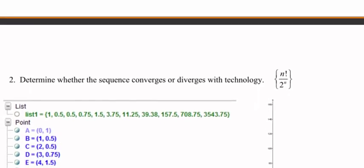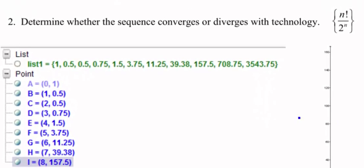Our next example, I'll bring up the whole thing. Determine whether the sequence converges or diverges. This time we're gonna be using technology because our sequence is n factorial over 2 to the n. Yeah, there's no way we're gonna be able to do this one by hand.